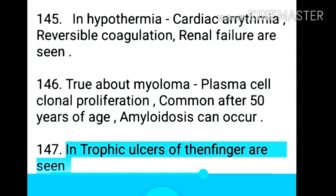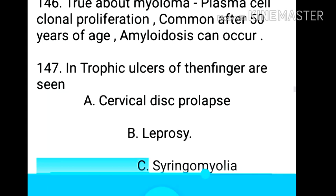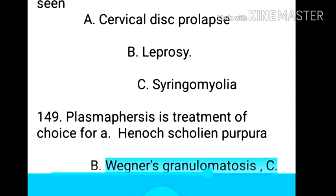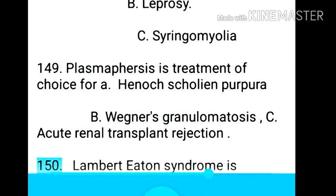Point 148: Trophic ulcers of the thin finger are seen in cervical disc prolapse, leprosy, and syringomyelia. Point 150: Plasmapheresis is the treatment of choice for Henoch-Schönlein purpura, Wegener's granulomatosis, and acute renal transplant rejection.